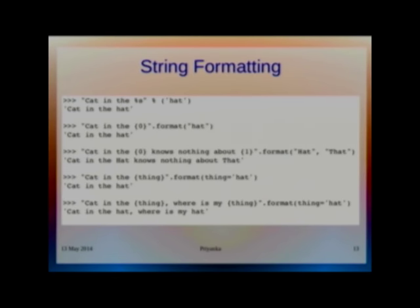The format function does the same thing. Zero is your first argument. Here we have passed one argument, it will take automatically here. All examples are very simple, you can see and understand. For example, zero and one - zero is replaced by 'hat' and one is replaced by 'that'. Here you have specified 'thing' and in format you are giving the definition of thing. This is a good thing about Python.